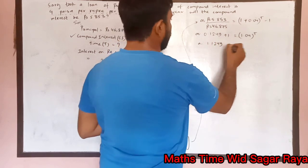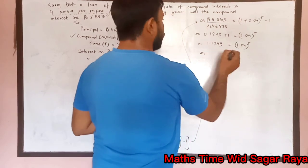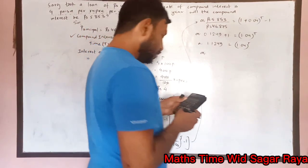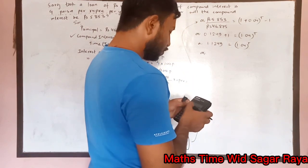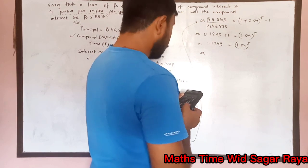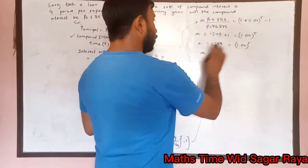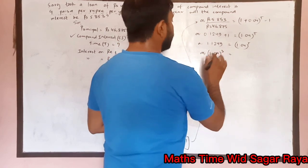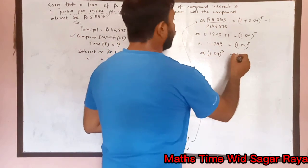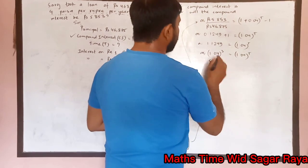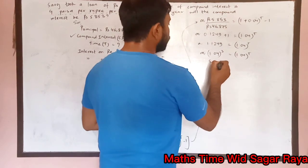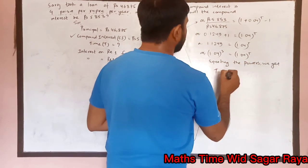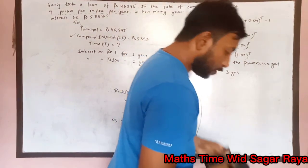We have base 1.04, so let's try powers. (1.04)^2 = 1.0816 — not enough. Trying (1.04)^3 gives exactly 1.1249. So we can write 1.1249 = (1.04)^3 = (1.04)^t. Since the bases are the same, by laws of indices, equating the powers gives t = 3 years. That is our required answer.